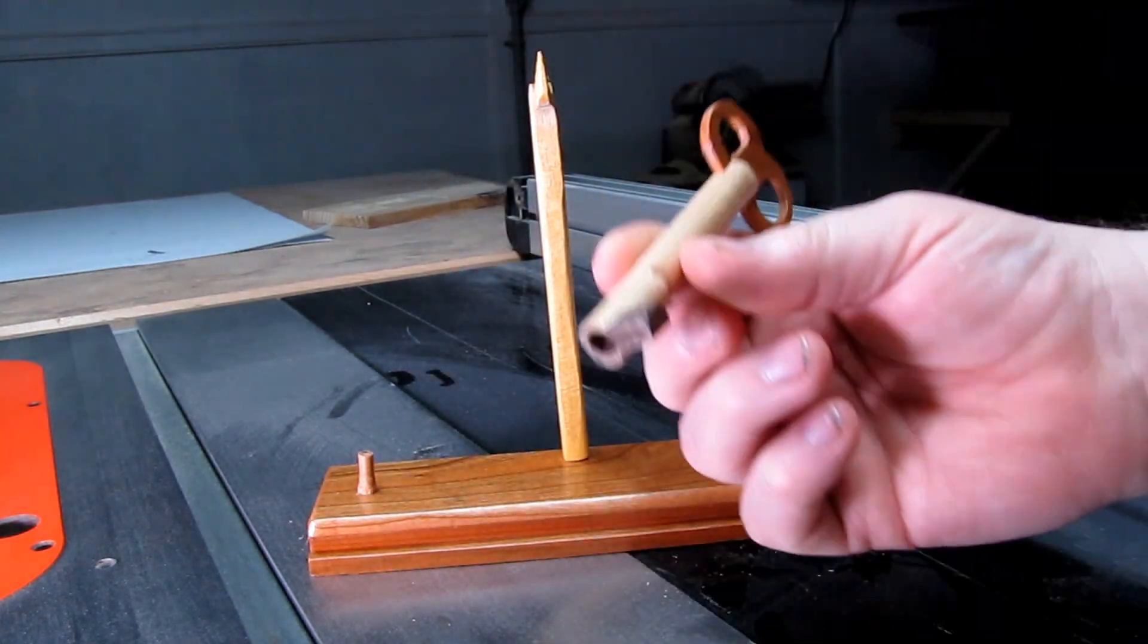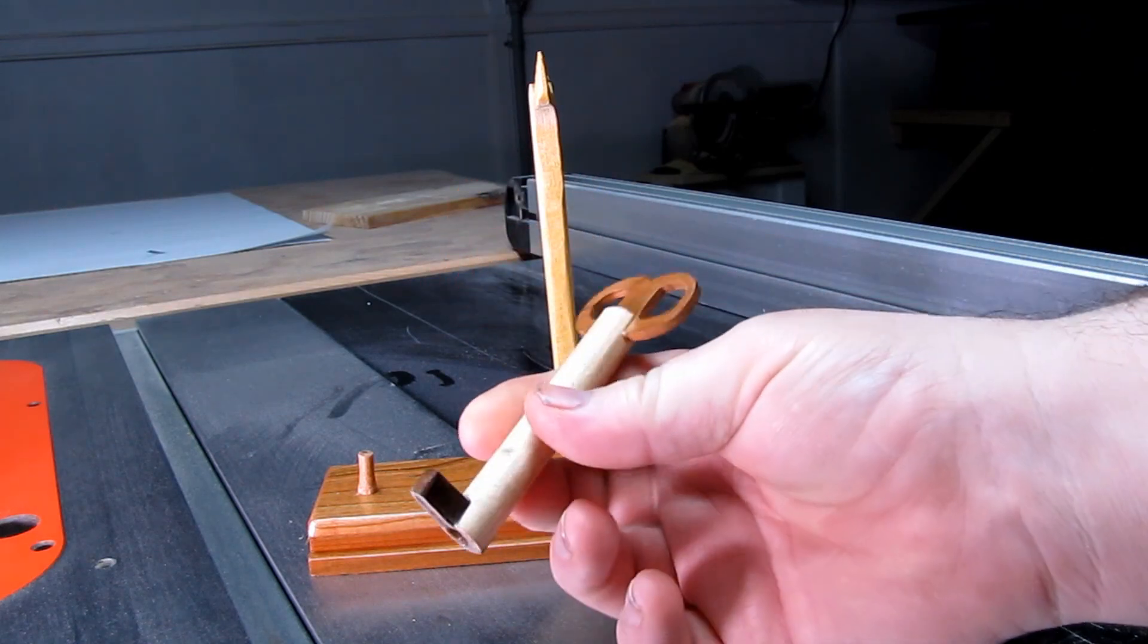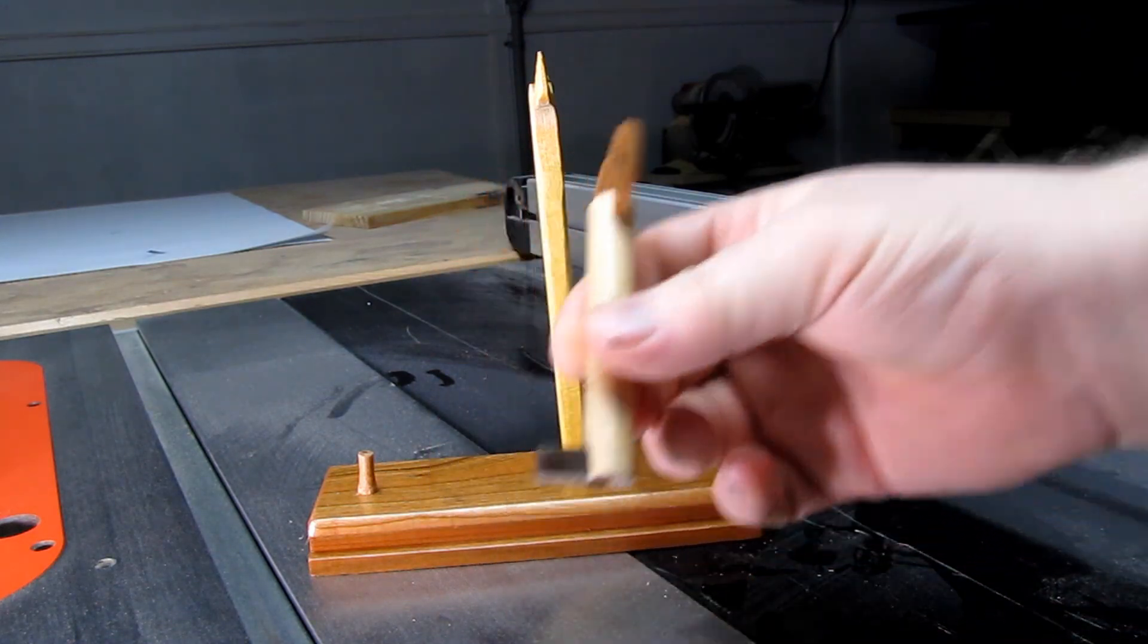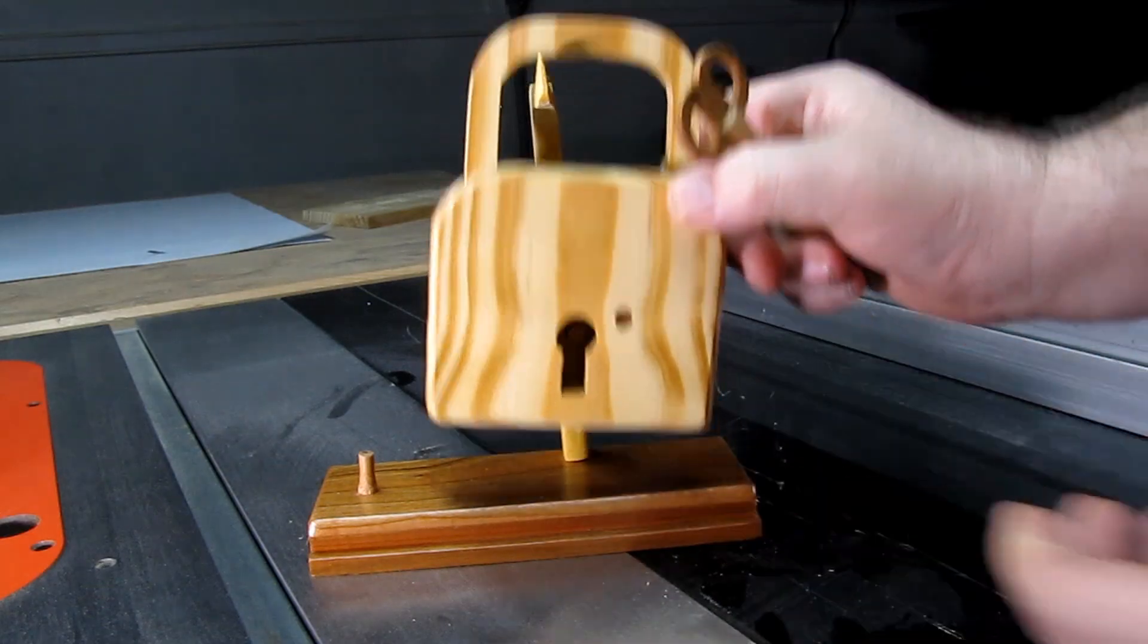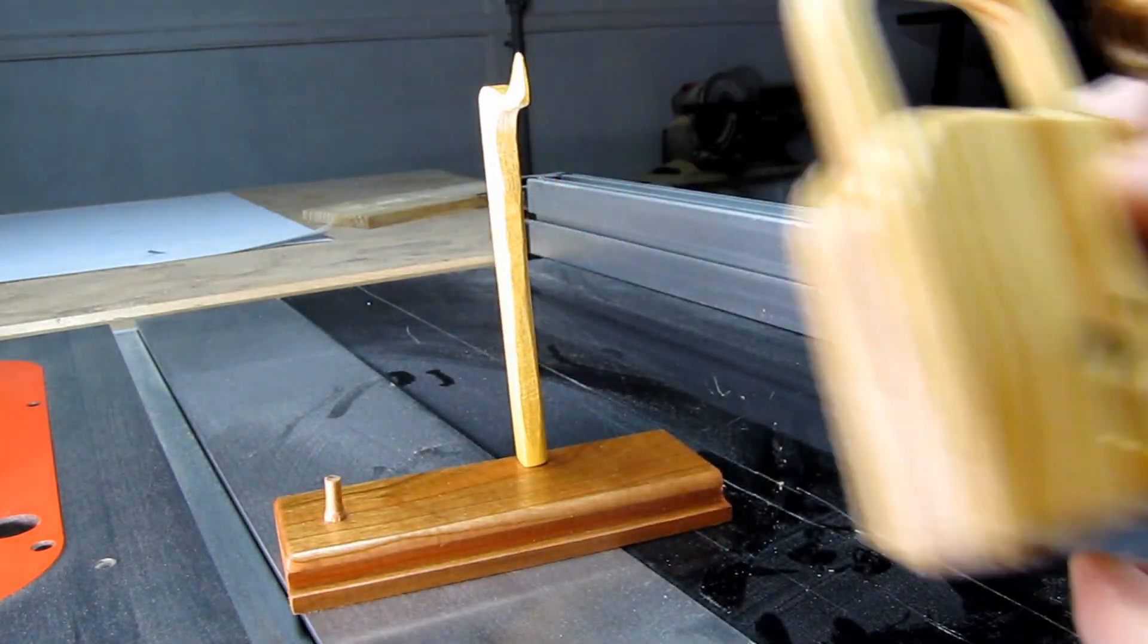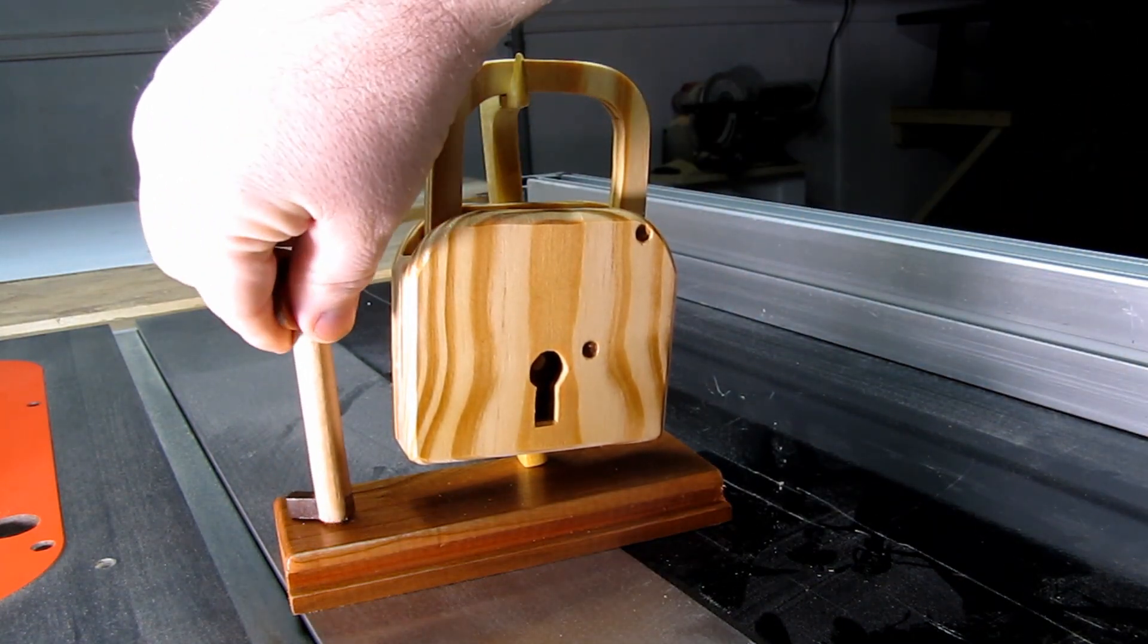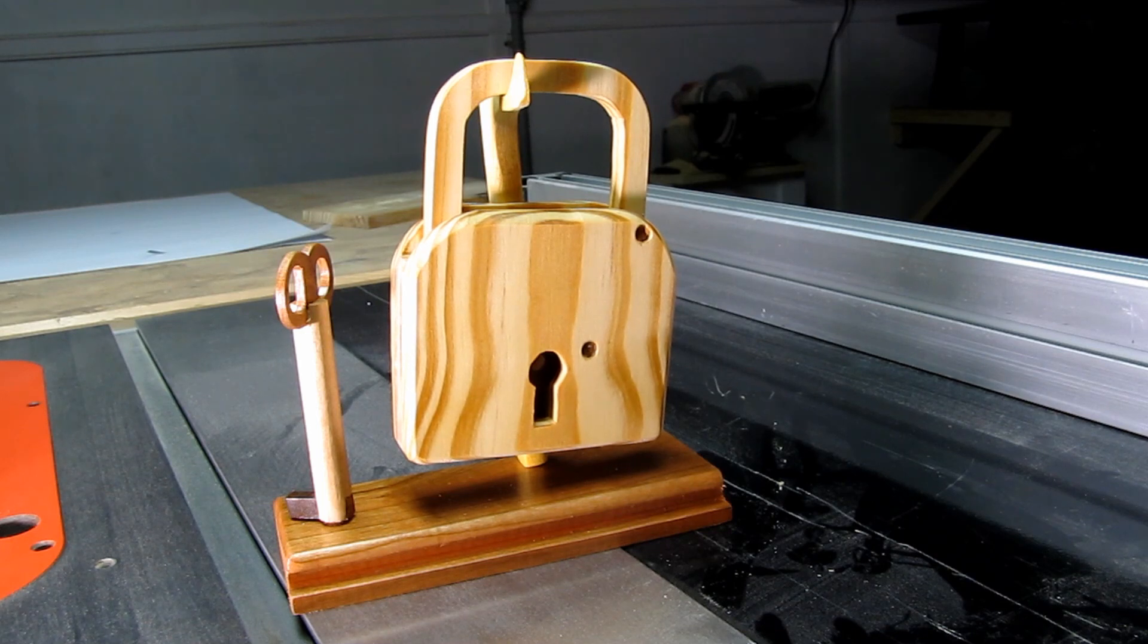And there it is. The key is a dowel with a neat little key topper there, and I made this little rack here to hang it off of. So let me give it a little show there. There's my working key and lock made out of wood.